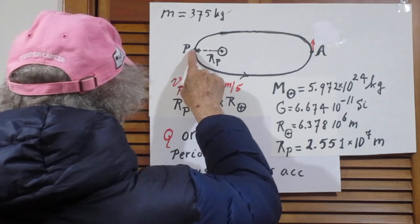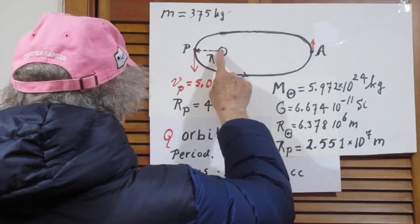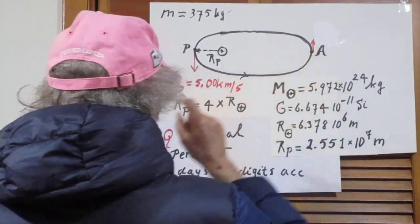This is perigee, when the satellite is closest to the center of the Earth. This is apogee, when the satellite is farthest away from the Earth.